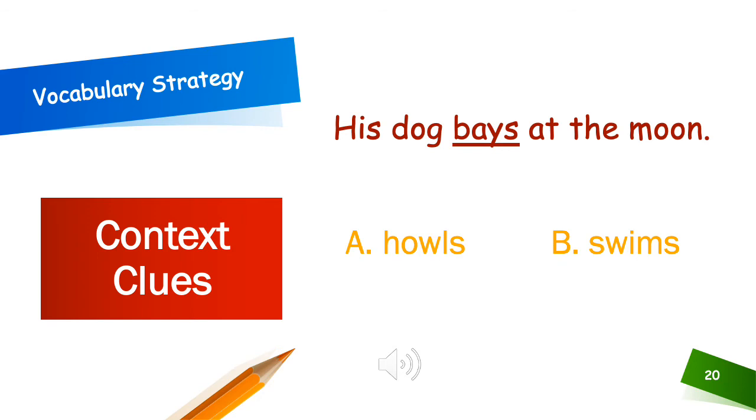His dog bays at the moon. A howls or B swims. Just like before, I'm going to plug in my choices to help me figure out what bays mean. His dog howls at the moon or his dog swims at the moon. Which one makes the most sense? Yeah. A. His dog bays or howls at the moon. You can't swim at the moon. That makes no sense.